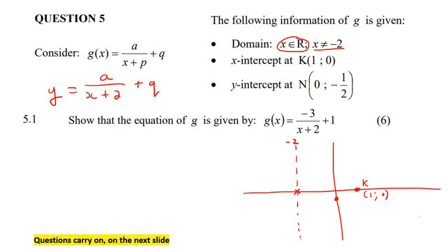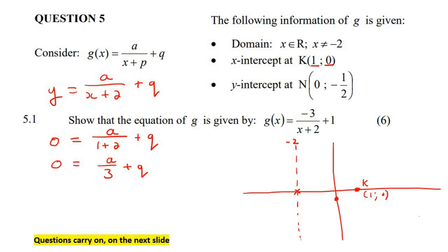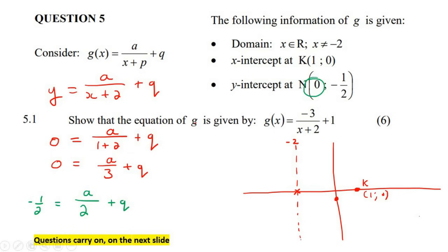So we have y = a/(x + 2) + q. We can substitute the x-intercept (1, 0) into the equation, giving 0 = a/3 + q — that's equation one. We then substitute the y-intercept (0, -½), giving -½ = a/2 + q — that's equation two. Now we have two equations and two unknowns, so we use simultaneous equations.